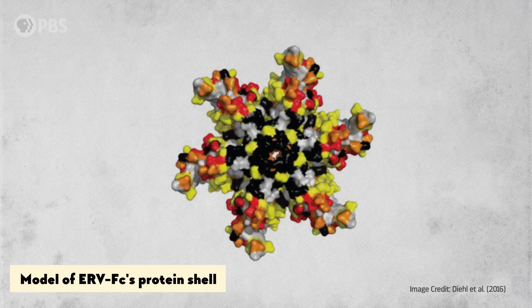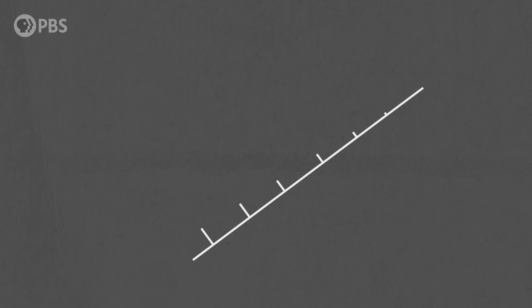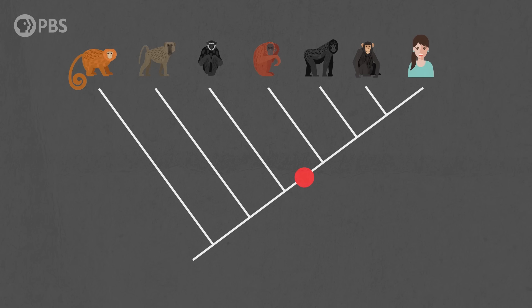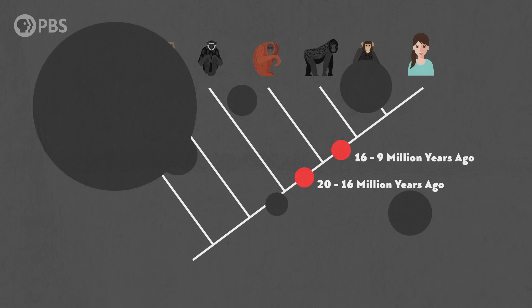So we actually have two different fossils of ERV-FC in our DNA. And as far as we know, they don't do anything right now. The older one comes from an infection in the common ancestor of all great apes, sometime between about 20 million and 16 million years ago. And the younger one we got from the common ancestor of all African great apes, between about 16 million and 9 million years ago.